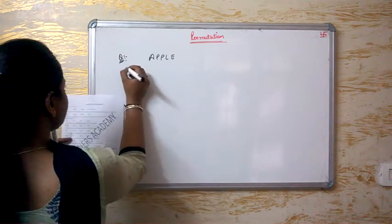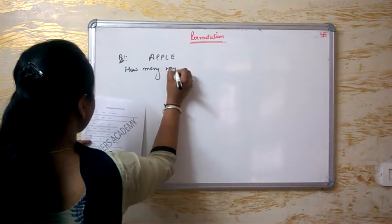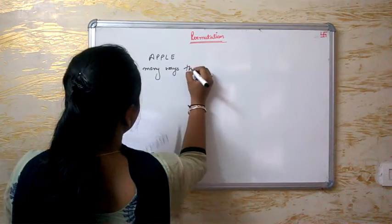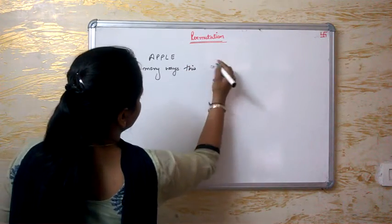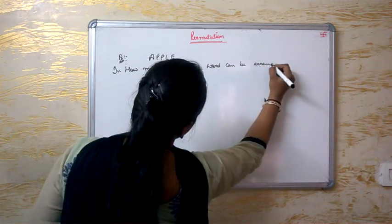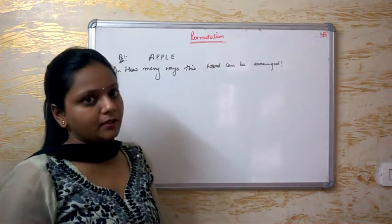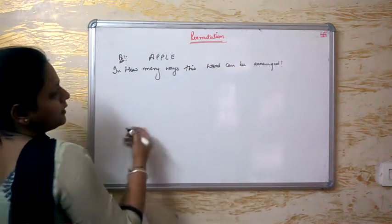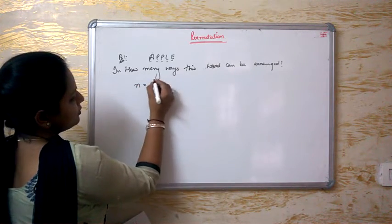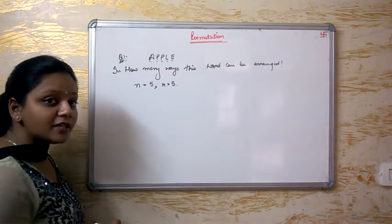So if the word APPLE is given to you, the question is: in how many ways can the letters of this word be arranged? There are five letters total. In this question, N is 5 and R is also 5 because we need to arrange the whole word.